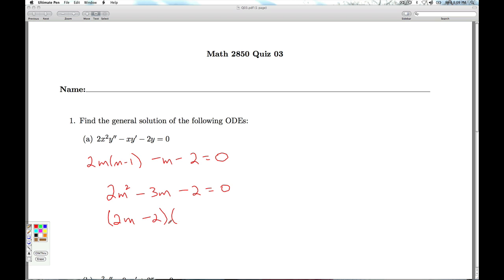2m plus one times m minus two, which gives us m equal minus a half, two. Now remember, the assumption we were making is that y equals x to the m. And so from this, we get y equals x to the negative one half and y equals x squared.